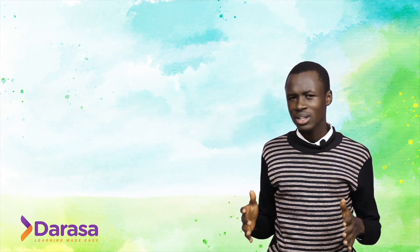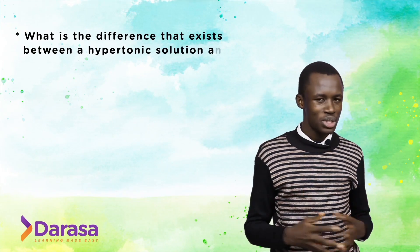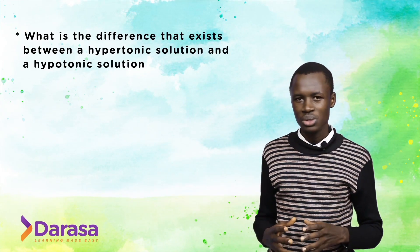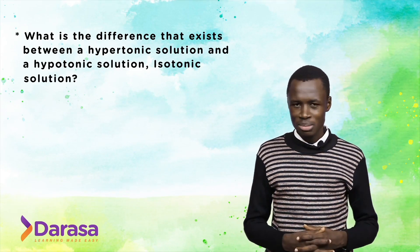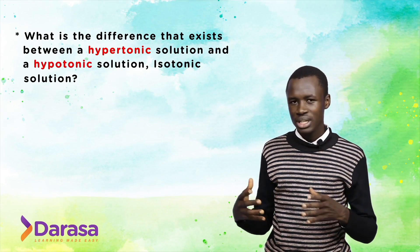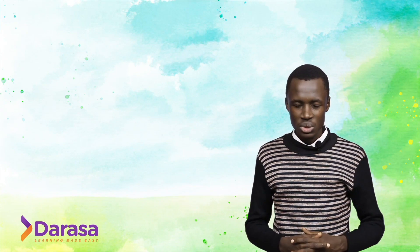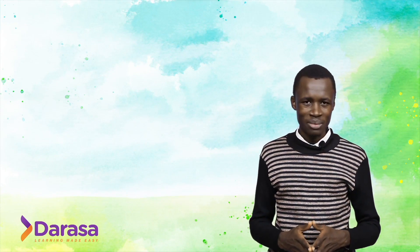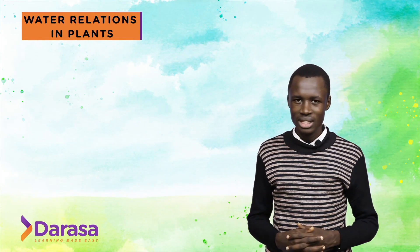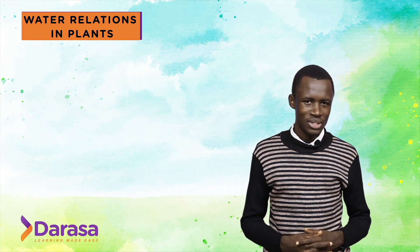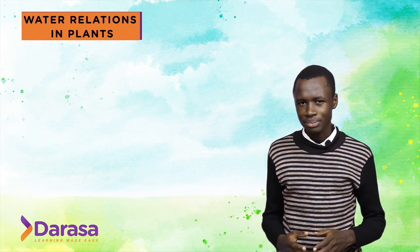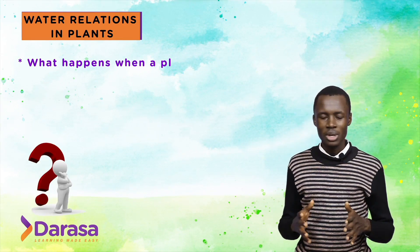What happens when a plant cell is placed in a hypertonic solution? And what is the difference between a hypertonic solution and a hypotonic solution? We can also add the isotonic solution — three terms: hypertonic, hypotonic, and isotonic. The topic of discussion today is water relations in plants. Welcome to Darasa, where learning is made easy. My name is Mr. Ben.